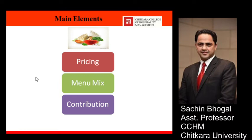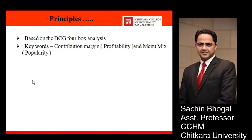Menu engineering is based on three elements. It helps organizations identify: number one, the setting of pricing for dishes; number two, getting the profitability of each dish from the menu; and number three, getting the popularity of the dishes in the menu. These are the three elements involved in menu engineering.